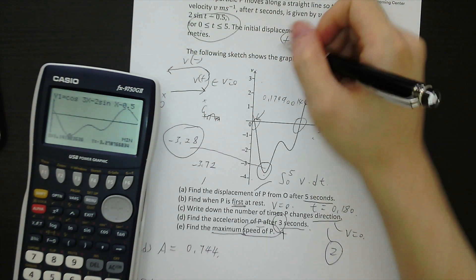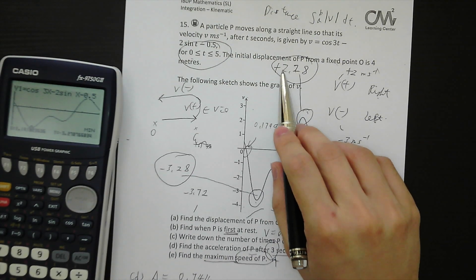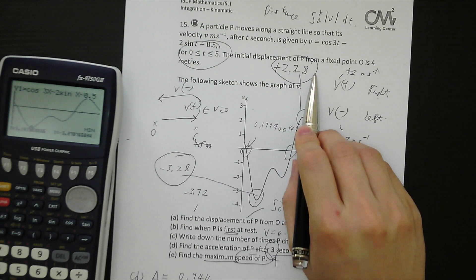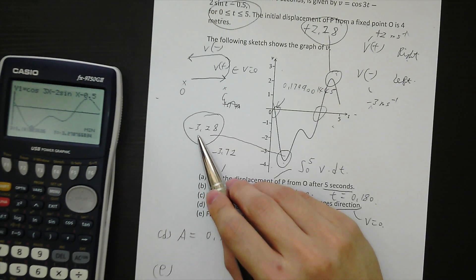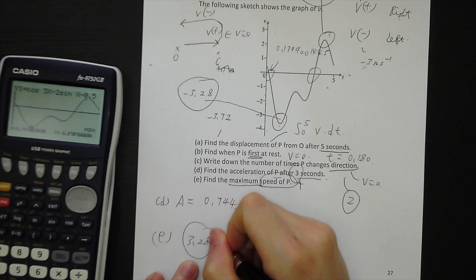So one is positive, one is negative. Going to the right hand side at the speed 2.28, and going to the left hand side at the speed 3.28.